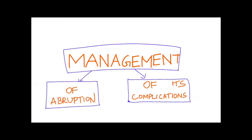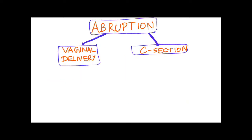Abruption is managed by termination of pregnancy. Unlike placenta previa where expectant management is an option, in abruption expectant management is not appropriate — the pregnancy must be terminated for the sake of the mother. Mother's life is the priority, as continuing the pregnancy can be life-threatening.